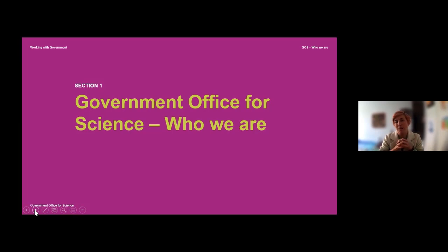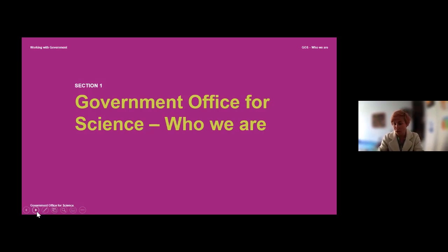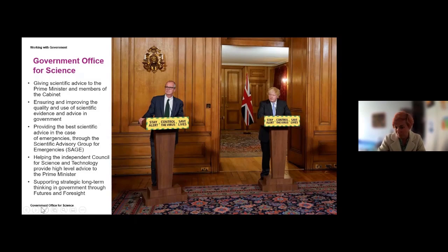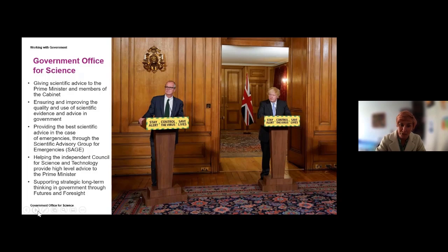Go Science is a group of science and policy advisors who sit between central government and other government departments. We are nominally part of BEIS but effectively act independently in supporting advice to the PM and across government for science. Our overarching aim is to strengthen science systems in government in order to provide a better evidence base for decision making and prompt science advice to policy. Our head is Patrick Vallance, who advises directly to the Prime Minister and is involved in groups like SAGE, the Independent Council for Science and Technology, and futures and foresight projects.